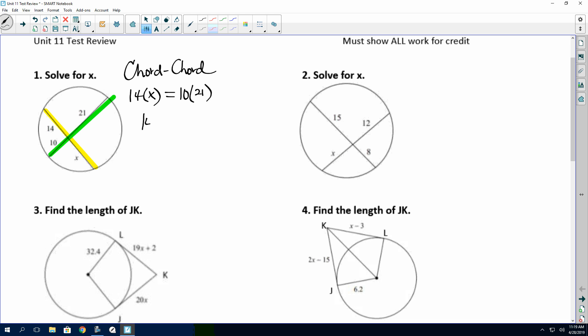And then on my green chord, that's the 10 times 21. So really, this is simplified to 14x equals 210. And then we're solving for x just by dividing by 14 on both sides, and x is 15.